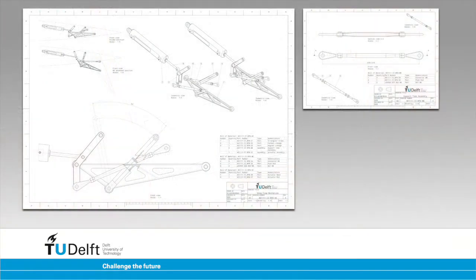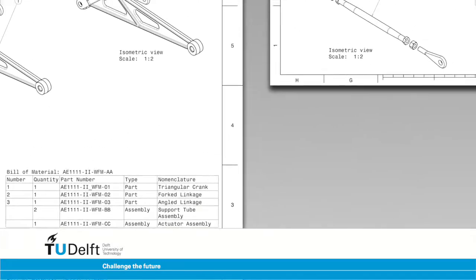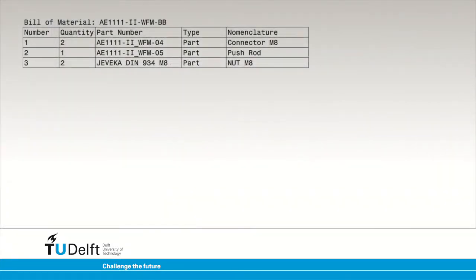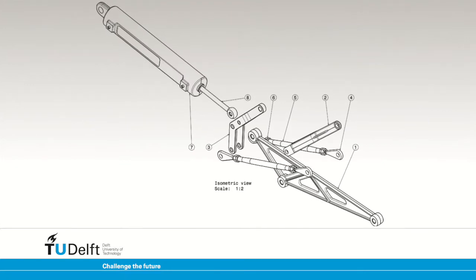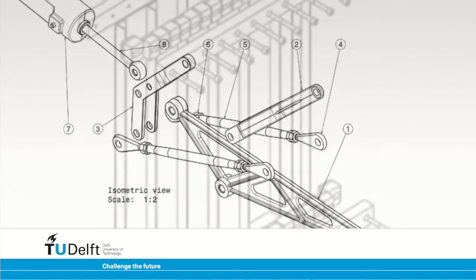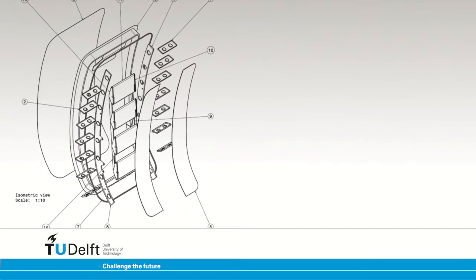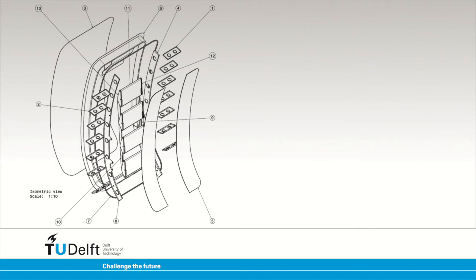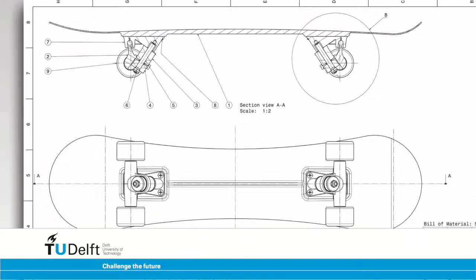Assembly drawings often contain a bill of material, usually referred to as the BOM. In the BOM, all items shown on the assembly drawing are listed. Numbers are shown in balloons at one of the assembly drawing views. Sometimes a special view is created where all components of the assembly are shown in a 3D projection, with components offset from their final assembled position so that every component is clearly visible. A view like this is called an exploded view. Balloons with numbers can be used in the exploded view to number the parts and components.